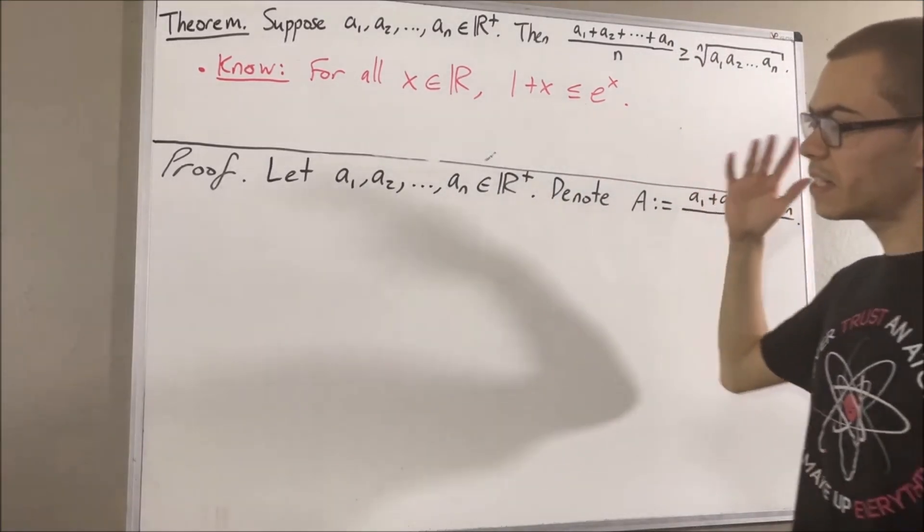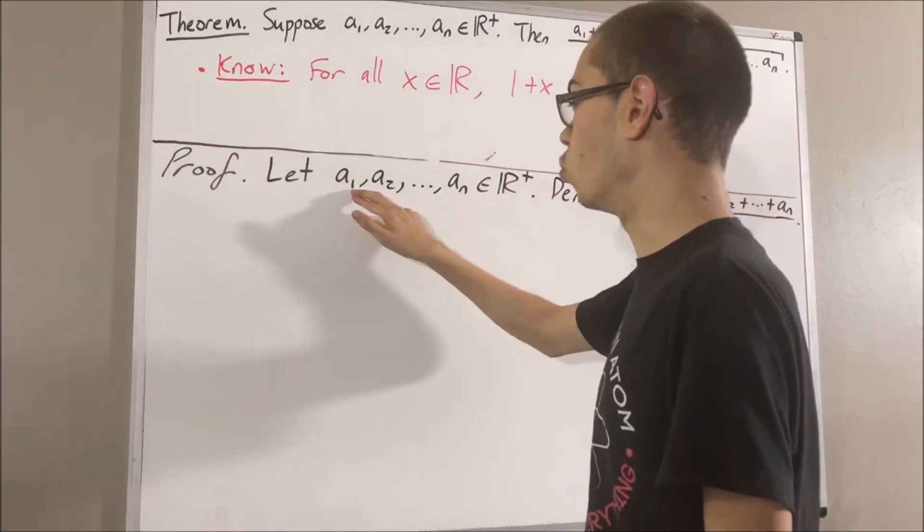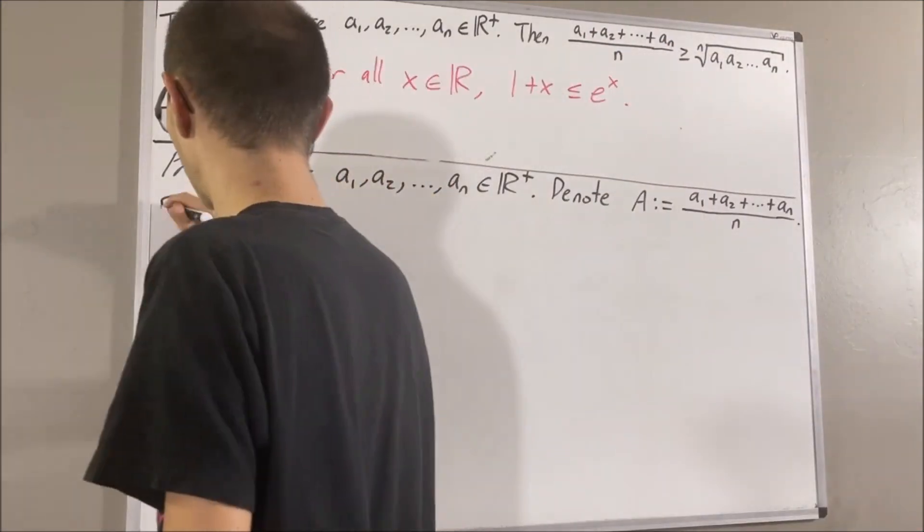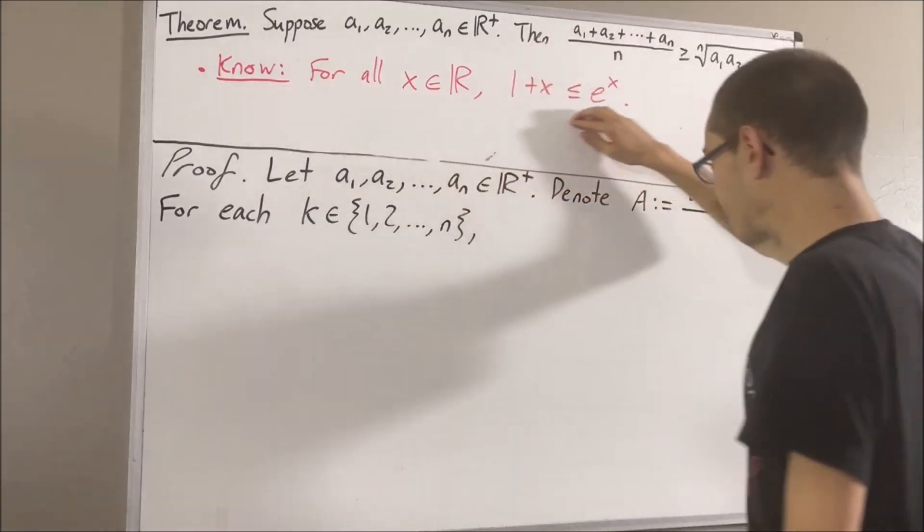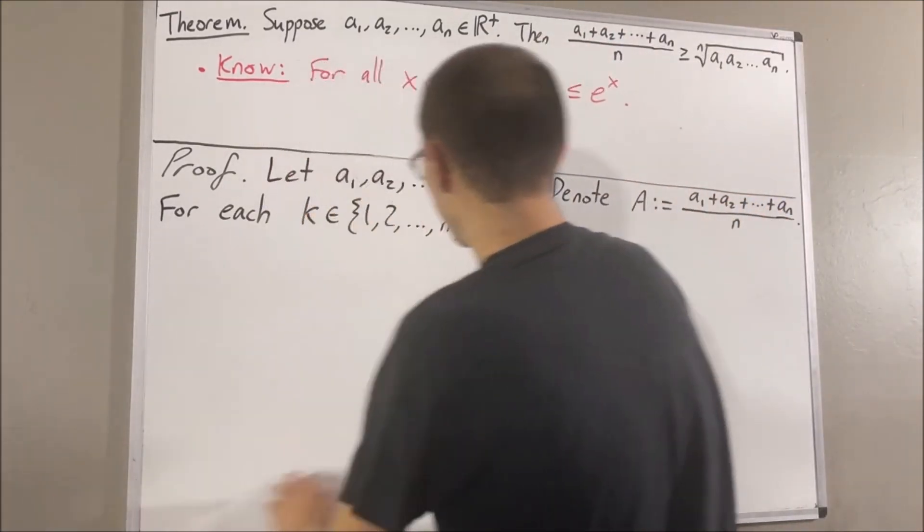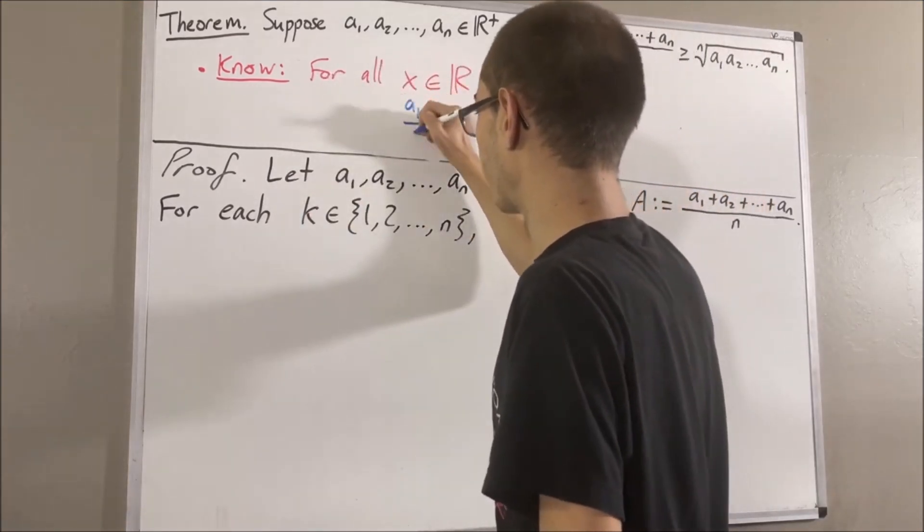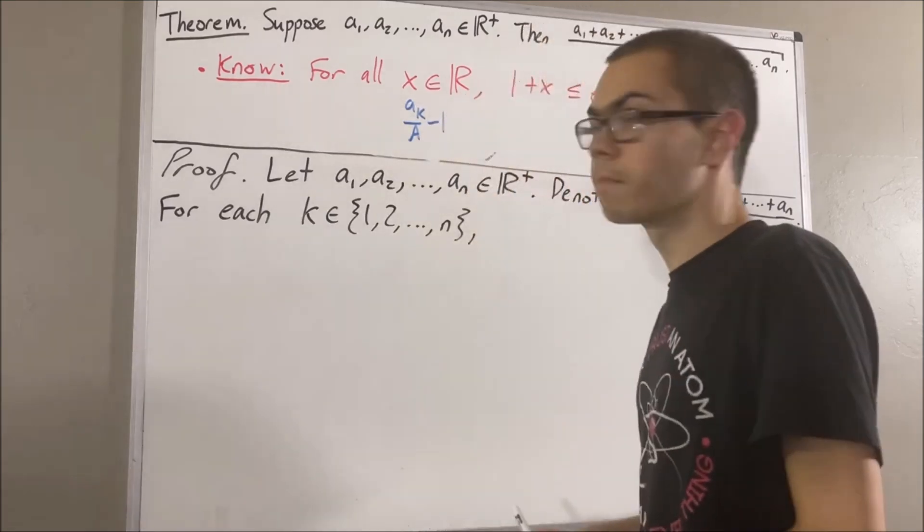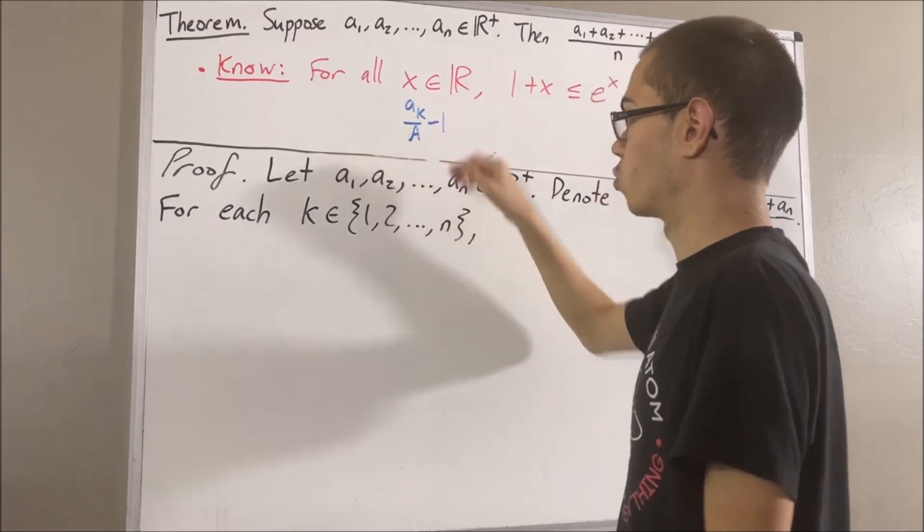And now, let's consider an arbitrary integer k that lies between 1 and n. Well, since this statement works for every real number, then in particular it must work for the real number a sub k over capital A minus 1. So, we're going to take x to be a sub k over capital A minus 1.